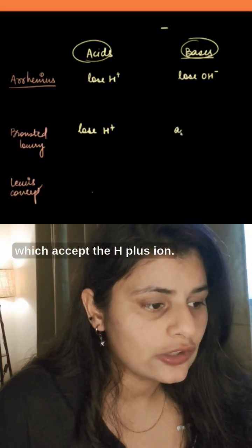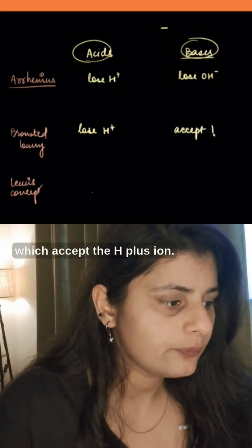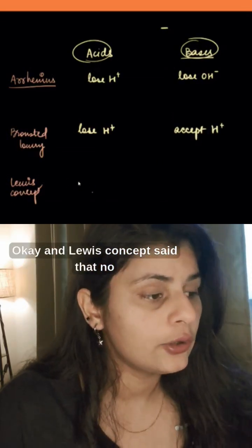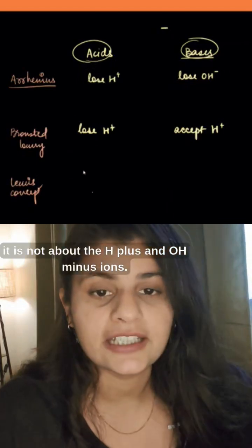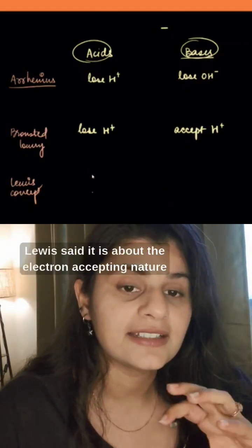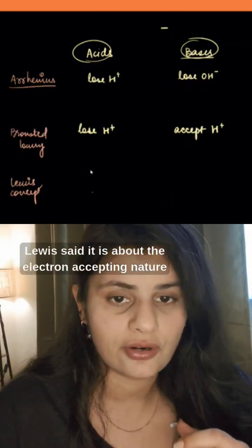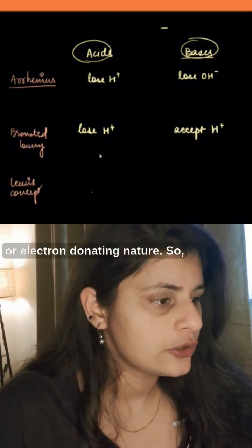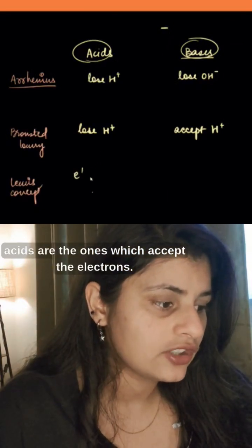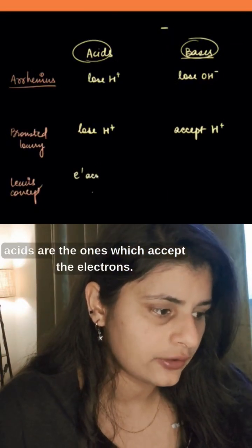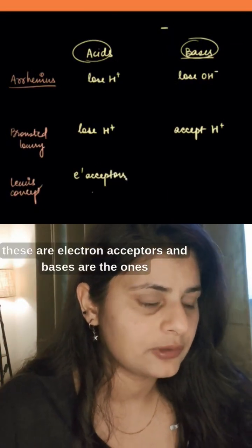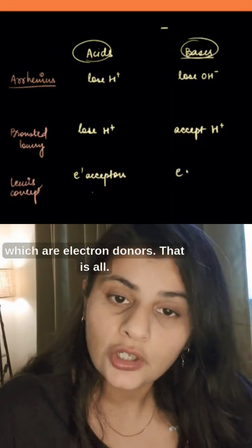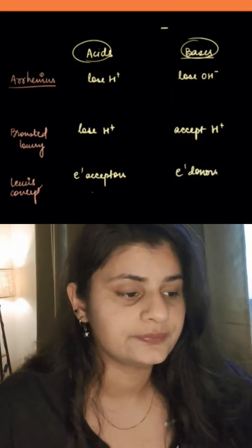Brønsted-Lowry said that acids are those which lose H⁺ ions, but bases are those which accept the H⁺ ion. The Lewis concept said it's not about H⁺ and OH⁻ ions — Lewis said it's about electron-accepting or electron-donating nature. So acids are electron acceptors and bases are electron donors.